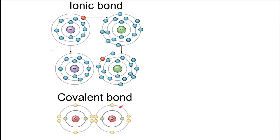The next type of bond occurs between two atoms that are missing just a few electrons — one, two, or three — in their outermost shell. Rather than giving and receiving electrons, a covalent bond is the sharing of electrons. For example, two oxygen atoms, both missing two electrons in the outermost shell, can share electrons so that both fill their outer shells with eight electrons. This sharing of electrons means the two atoms become intrinsically linked or bonded together — that's a covalent bond.